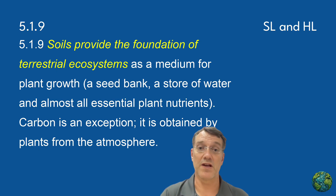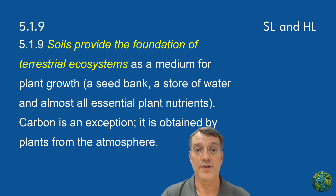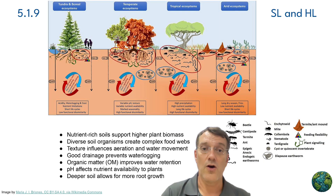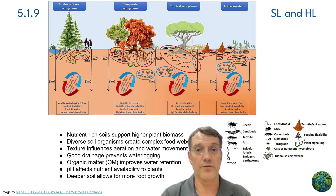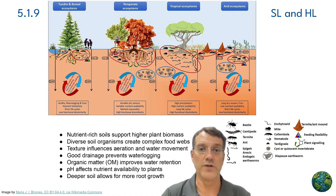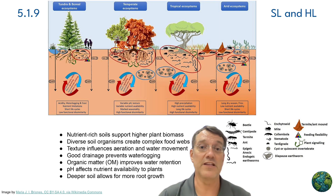Soils provide the foundation of terrestrial ecosystems because they serve as a medium for plant growth, a seed bank, a store for water, and a source of almost all essential plant nutrients — carbon being the notable exception, as plants obtain it from the atmosphere through photosynthesis. Nutrient-rich soils support higher plant biomass, while diverse soil organisms create complex food webs. Soil texture influences how air and water move throughout the system, good drainage prevents waterlogging, and organic matter improves water retention. The pH level affects nutrient availability to plants, and deeper soils allow more extensive root growth. The physical and chemical components of soils interact with climatic factors to shape the internal soil ecosystem, which in turn determines the types of plants and animals typically found in a given biome.